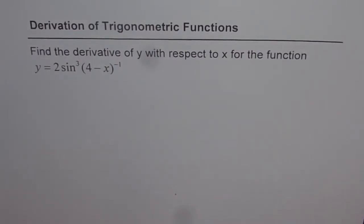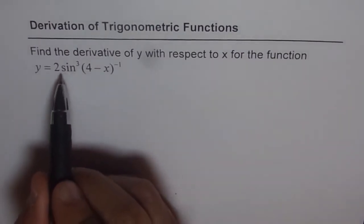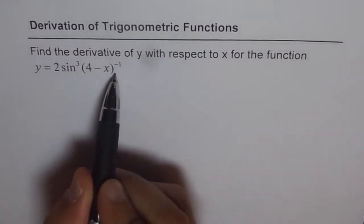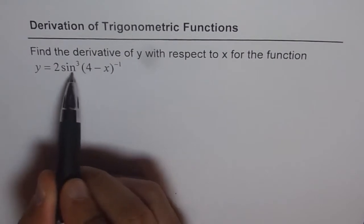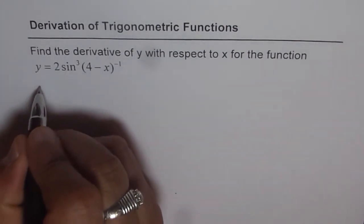Derivation of trigonometric functions. Find the derivative of y with respect to x for the function y equals 2 sin cubed of 4 minus x to the power of minus 1. In this function, it is sin cubed and that is the angle for sin. So we need to find the derivative of this — that means dy/dx.